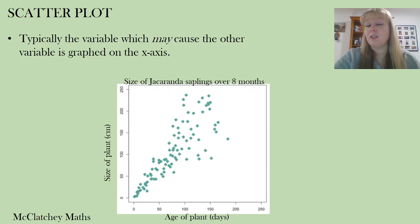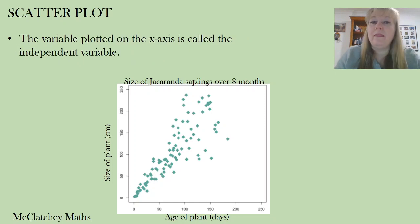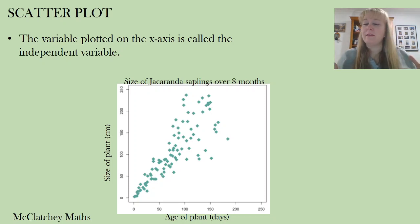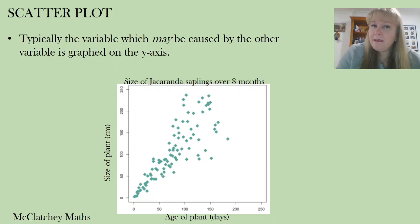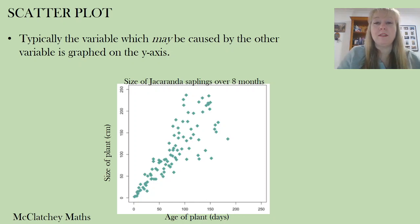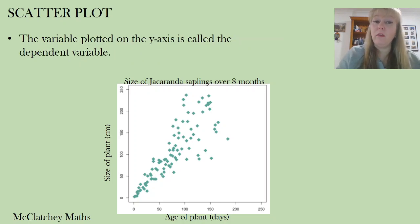The size of the plant could be determined by how old the plant is, so we put the age of the plant on the x-axis — we call that the independent variable, meaning it's not caused by the plant's size. The variable that might be caused by another is graphed on the y-axis; we call that the dependent variable because it depends on the age of the plant.